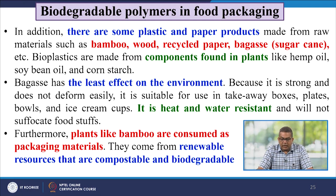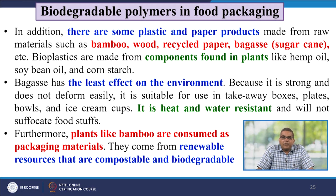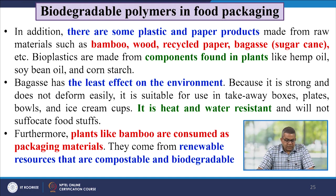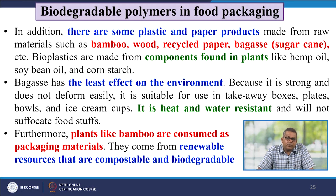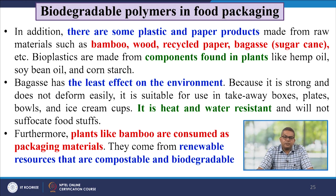There are also plastic or paper products made from raw materials like bamboo, wood, recycled paper, bagasse, and sugarcane. Biopolymer plastics are made from components found in plants like hemp oil, soybean oil and cornstarch. Bagasse has the least effect on the environment as it is strong and does not deform easily. It is suitable for take-away boxes, plates, bowls and ice cream cups, being heat and water resistant. Plants like bamboo come from renewable resources that are compostable and biodegradable.